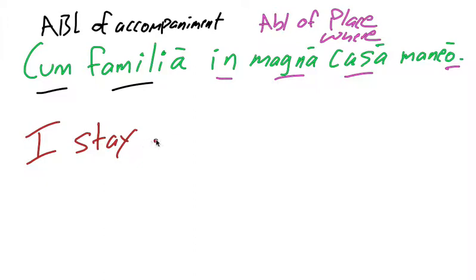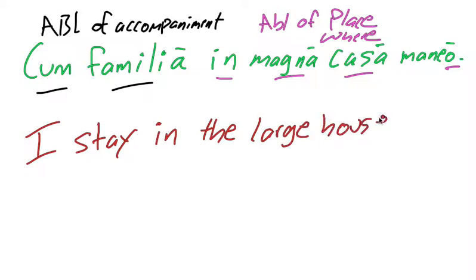I stay in magna casa, in the large house, cum familia, with my family. So here's the ablative of accompaniment part, cum familia.